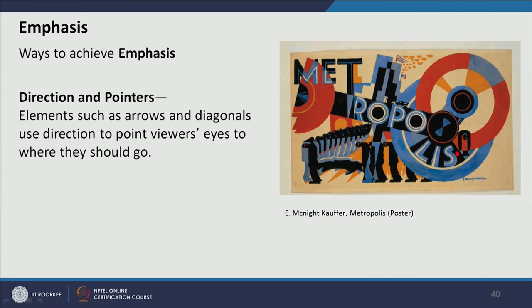Another way of creating emphasis is direction or pointer. In this composition, two triangles point toward the circle — though the circle is smaller in size and occupies less area, it still gets the highest emphasis. In the Metropolis composition, if we start reading from 'metro' to 'polis', the letter O is present and the circle is placed there; the typography directs toward the circle, and when we stop reading, the S is inside the circle. This circle is the center and complete focus of the composition.